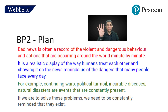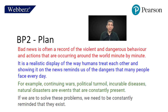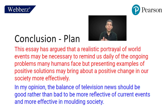Body paragraph 2 follows the same four-part structure. Main point — 'Bad news is often a record of violent and dangerous behavior occurring around the world minute by minute.' Supporting point — 'It is a realistic display of the way humans treat each other, and showing it on the news reminds us of the dangers many people face every day.' Example — 'Continuing wars, political turmoil, incurable diseases, and natural disasters are events that are constantly present.' Wrap-up — 'If we are to solve these problems, we need to be constantly reminded that they exist.'